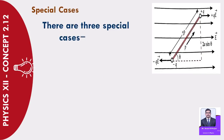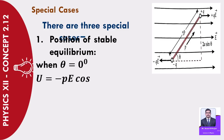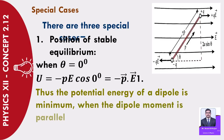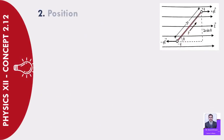There are three special cases. Case 1 — Position of stable equilibrium: when θ = 0°, U = −PE·cos 0° = −P·E (minimum value). Thus the potential energy of a dipole is minimum when the dipole moment is parallel to the external field. This is the position of stable equilibrium.